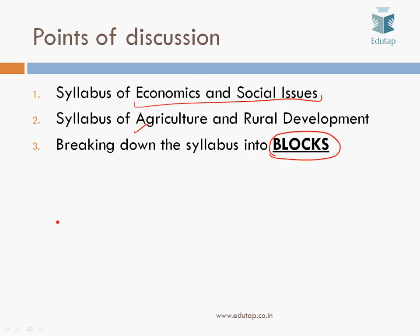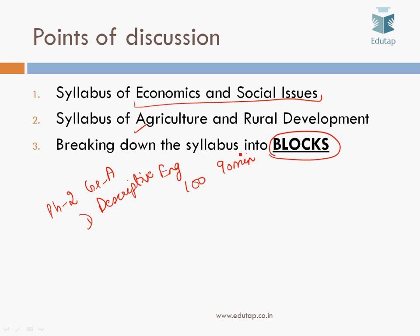If you remember the pattern for Phase 2 of Grade A, the first paper is on descriptive English, worth 100 marks with a time of 90 minutes. The second paper for Grade A is a combined paper for economics and social issues and agriculture and rural development, also worth 100 marks with a duration of 90 minutes.